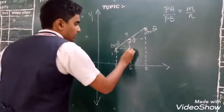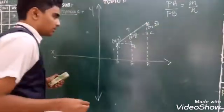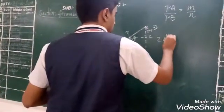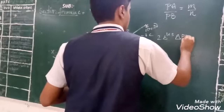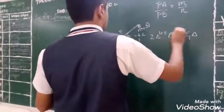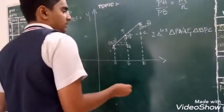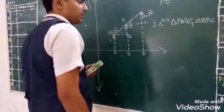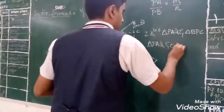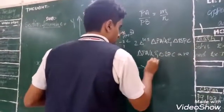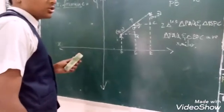So we have two triangles — triangle APQ and triangle BPR — which are similar. If two triangles are similar, then the ratio of their corresponding sides are equal.